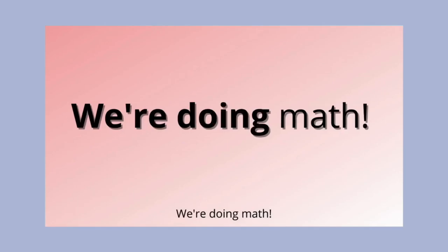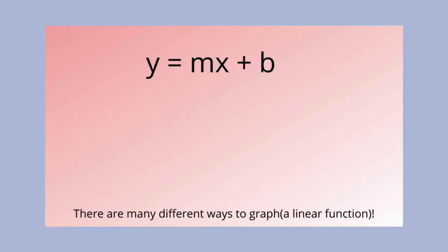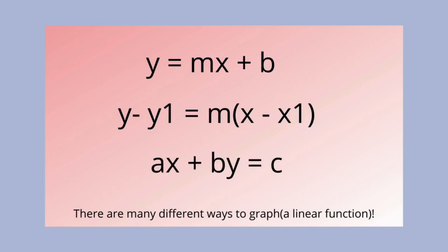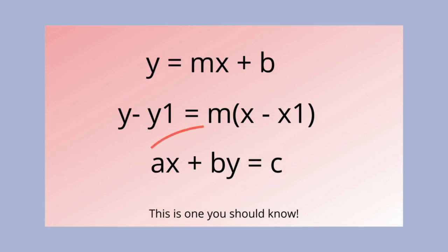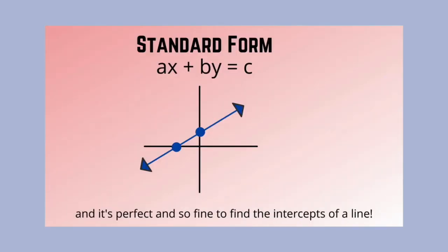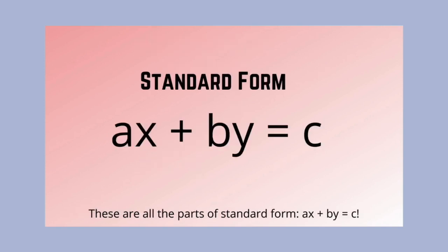We're doing math. There are many different ways to graph. This is one you should know. Its name is standard form, and it's perfect to find the intercepts of a line. These are all the parts of standard form: ax plus by equals c.